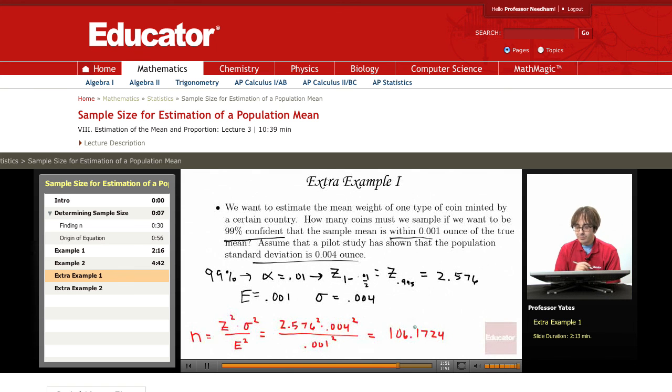Now again, if I sample 106, I am not sampling quite enough to get what I want. So I'm going to round this up to 107.